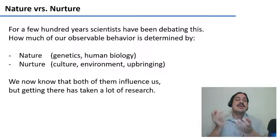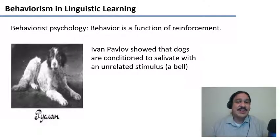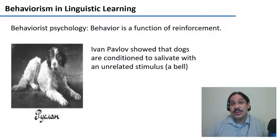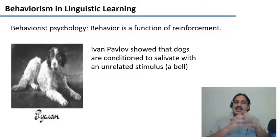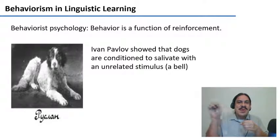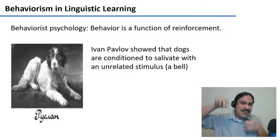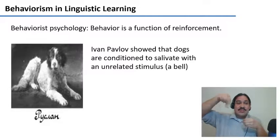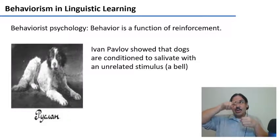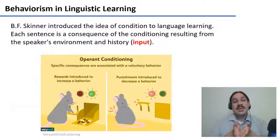For a long time, people only focused on the nurture aspect of language. For example, if you traveled 100 or 200 years ago and asked a psychologist how it is that people learn language, they would have told you about a theory called behaviorism or behavior psychology. They would have told you that living beings have behaviors because they are reinforced to show those behaviors. They would have mentioned Pavlov's dogs — Ivan Pavlov was a psychologist who trained a dog to salivate whenever they heard a bell, which they associated with food. There's a famous psychologist called B.F. Skinner who extended that idea into language learning.